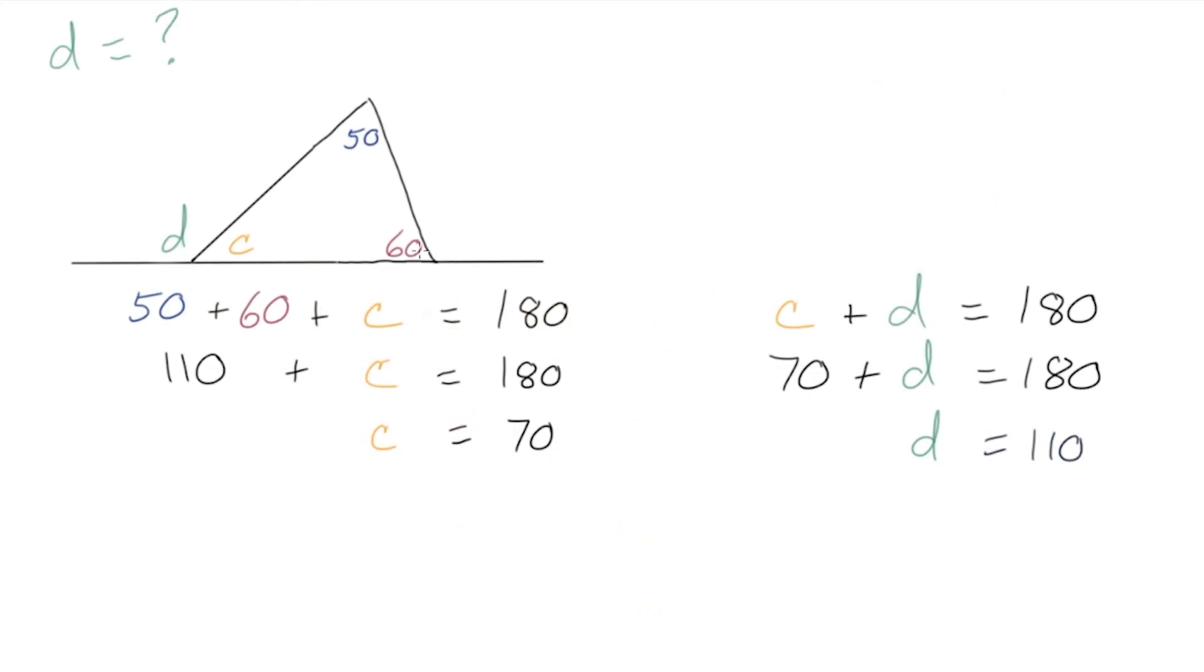So is that always going to happen? Or was that just a one time thing with this particular triangle and angles? How would we figure that out?